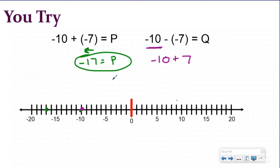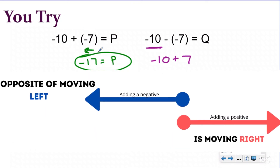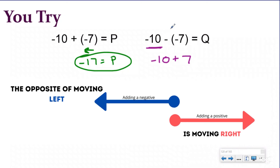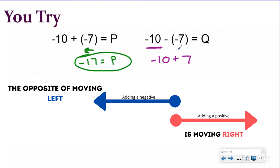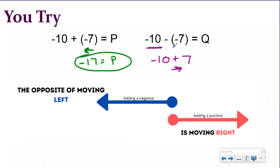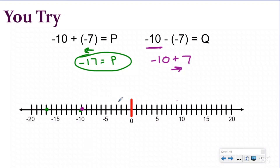I want to stop here to hit on something again. The reason that subtracting a negative is really adding is because it goes back to one of our first lessons about the opposite of an opposite. A negative number tells you to move to the left on the number line — that's why adding a negative means you move left. But the subtraction sign also means opposite. So subtracting a negative tells you to do the opposite of a negative, which is adding a positive. The opposite of moving left seven is moving right seven. These concepts all connect together, and it's important to understand what you're doing, not just take shortcuts. So starting at negative ten and moving to the right seven places brings us to negative three. Q equals negative three.